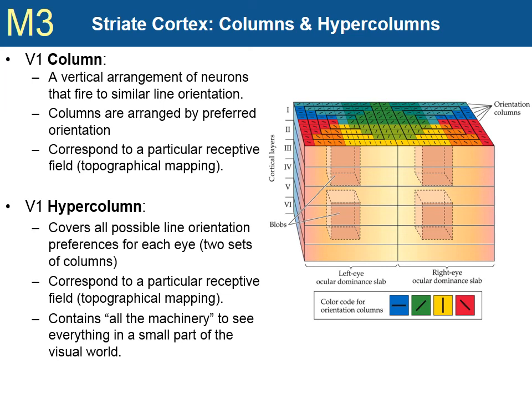The complete set of columns in the figure represents one hypercolumn. All of the columns respond to stimuli presented in the same receptive field — the same area of the visual world — but the neurons in each column respond to different line orientations. The neurons of the yellow columns all respond to vertical lines but not to horizontal lines, while the neurons in the blue columns respond to the same visual field but only to horizontal lines. This means each hypercolumn contains all of the neural machinery to see everything in the small part of the world corresponding to their visual field. The striate cortex is thus made up of a multitude of hypercolumns, each corresponding to the part of the world to which they are topographically mapped.